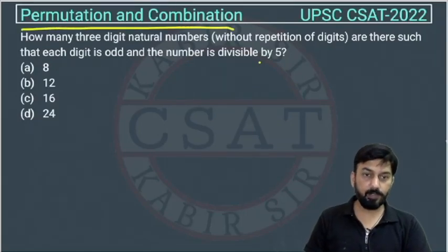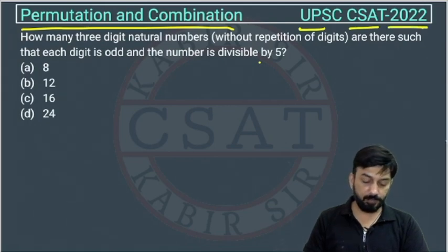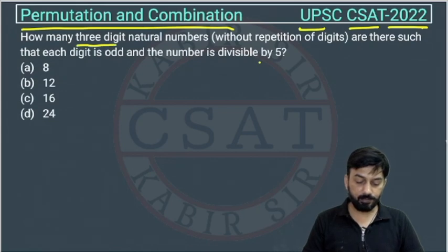This is a question from permutation and combination chapter asked by UPSC in CSAT paper of 2022. How many three digit natural numbers without repetition are there?